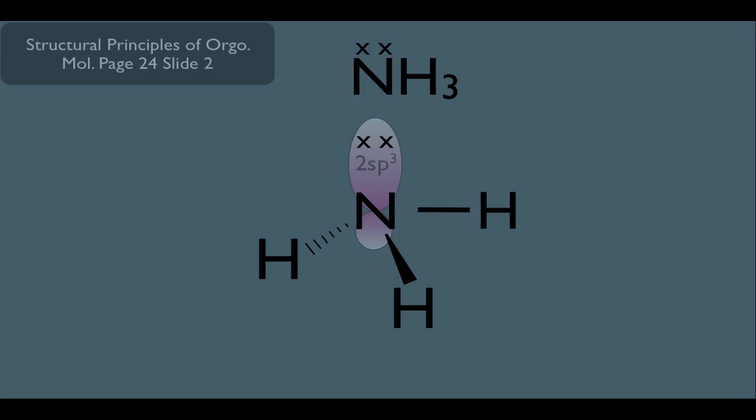And notice, because of that lone pair of electrons right there, that means the actual bond angles in this molecule are going to be 107.5 degrees. And this is because, remember, VSEPR theory says that lone pair electrons take up more space. So the electrons on top of nitrogen are simply squeezing these NH bonds and bringing those hydrogens closer together.